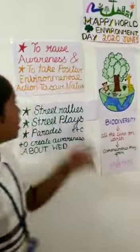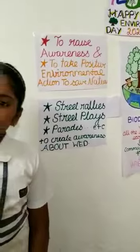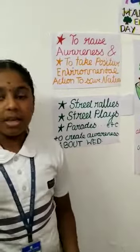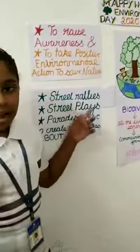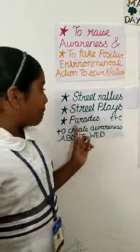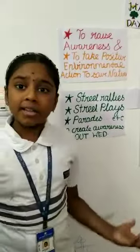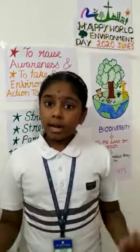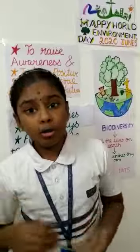World Environment Day, or Eco Day, is celebrated every year on the 5th of June in order to raise awareness and to take positive environmental action to save nature and the earth. WED is celebrated in many ways around the world, like street rallies, street plays, parades, etc., to create awareness. In cities around the world, various contests and debates are held to get people involved with the environment.